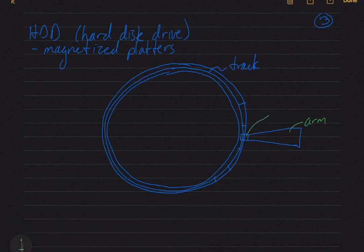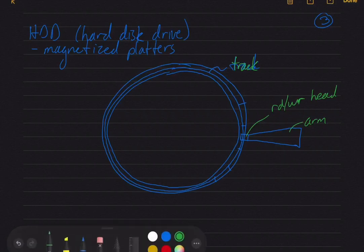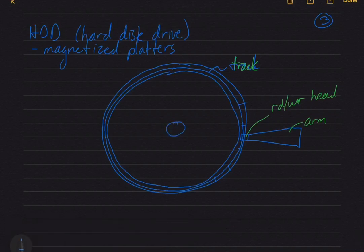So this is the arm. This crude thing here is the read write head. And I already did the track in blue. Bad me. Okay. And I'll just draw this little hub in the middle with the motor that drives it. Okay.